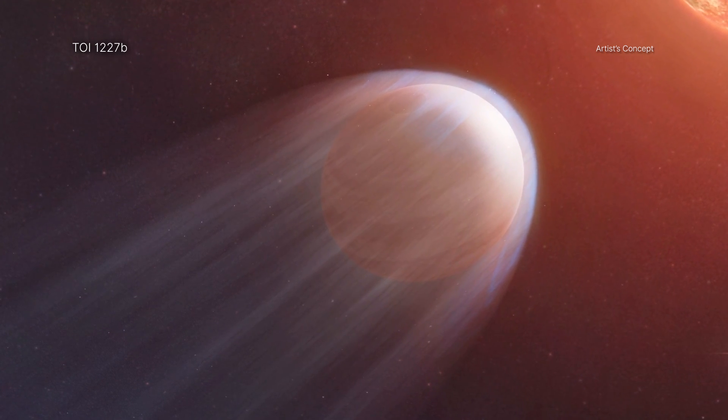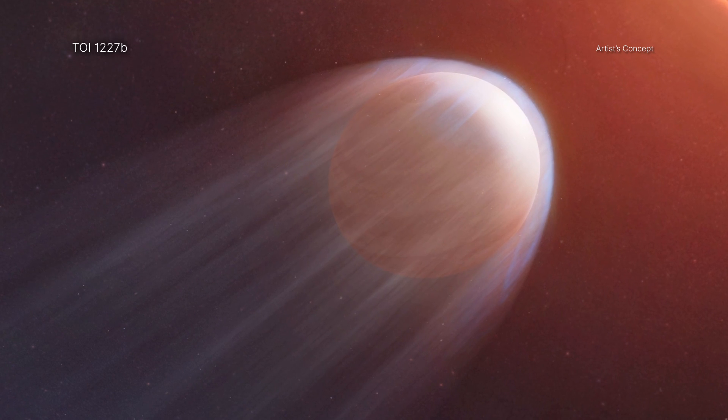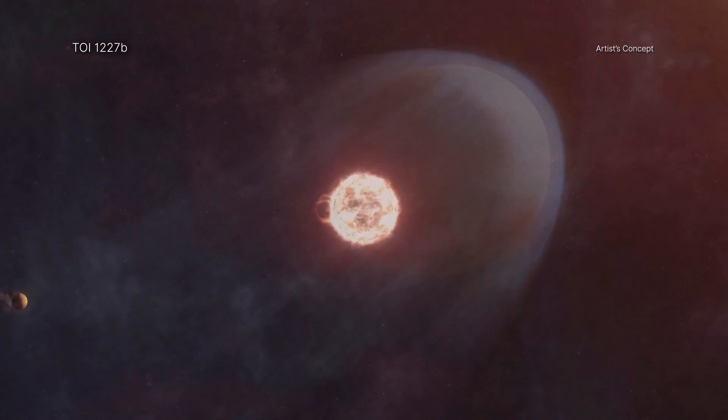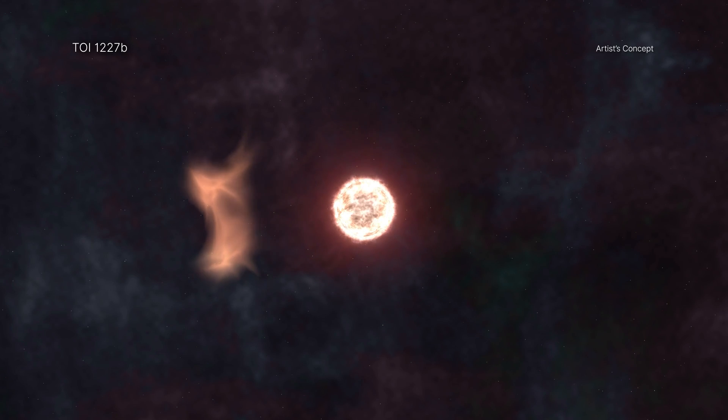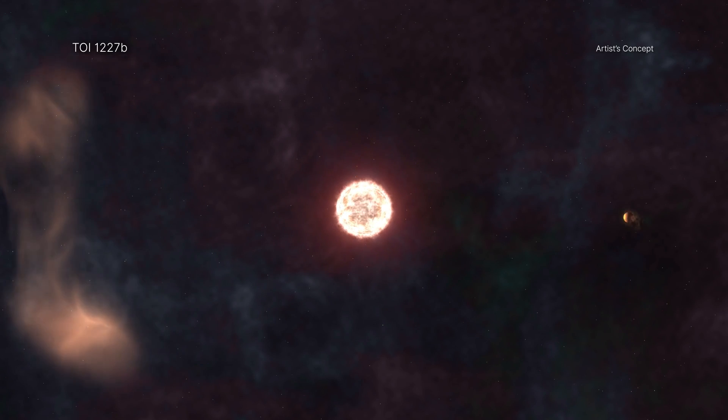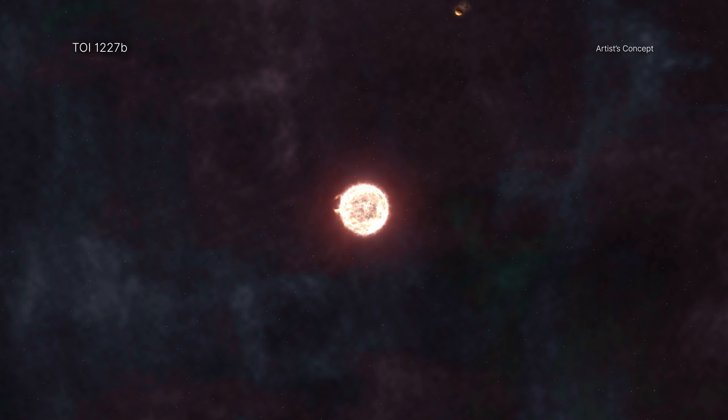The planet's atmosphere simply cannot withstand the high X-ray dose it's receiving from its star. Indeed, it is probably impossible for anything or anyone to live on TOI-1227b, either now or in the future.